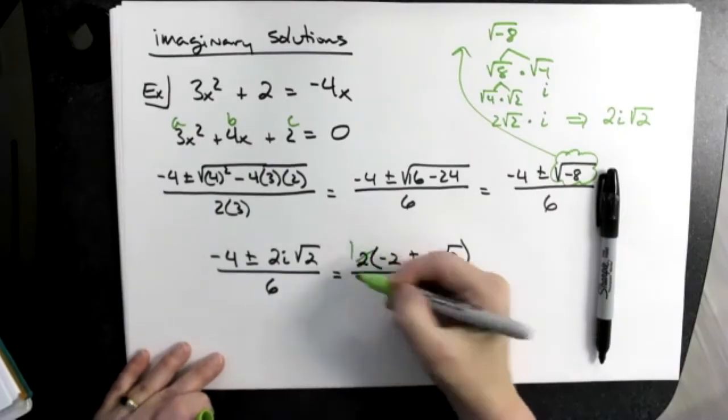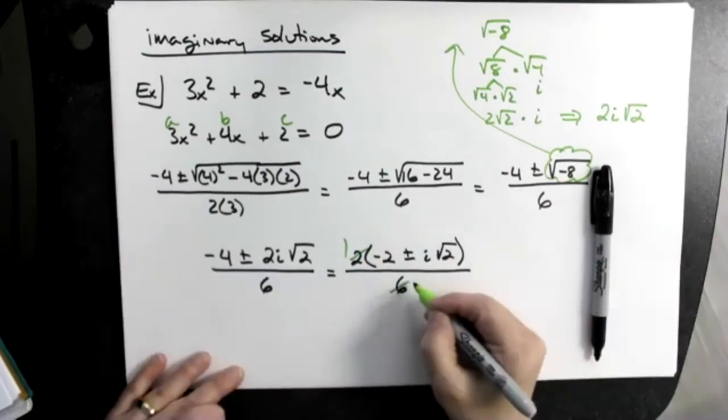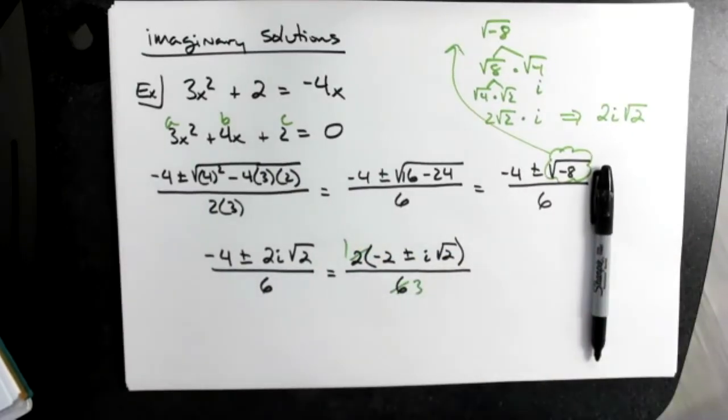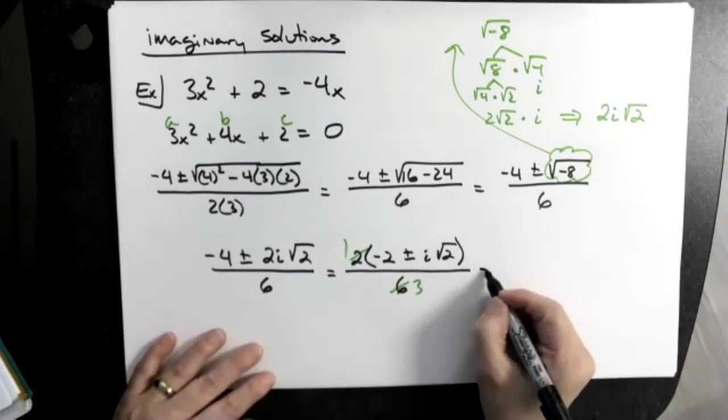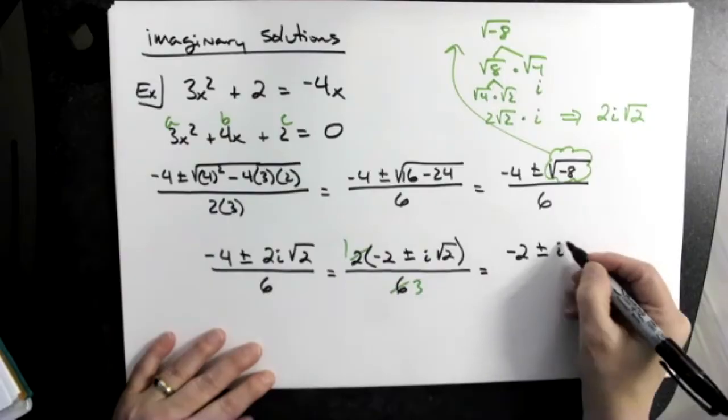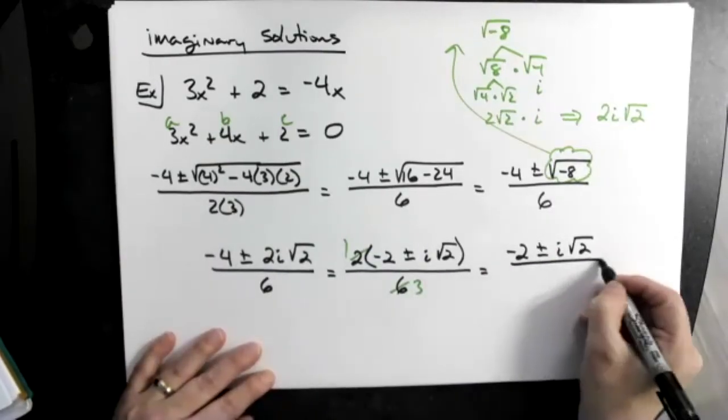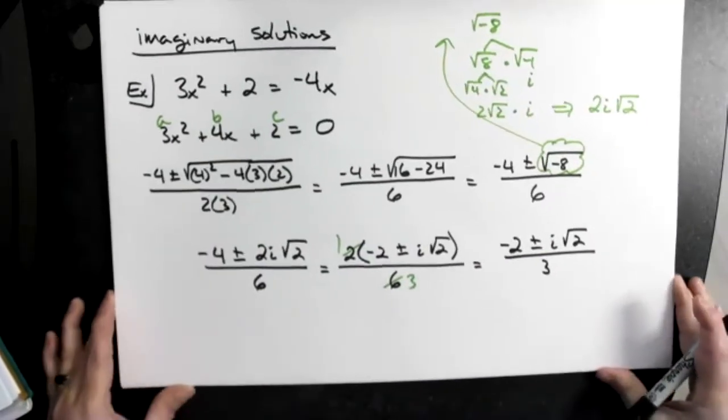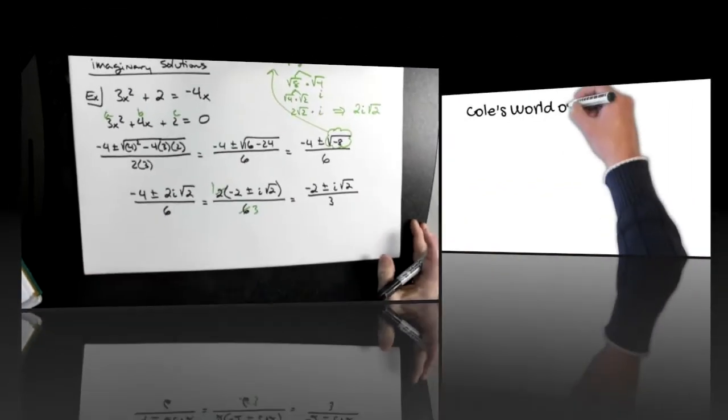So now we're down to negative 2 plus or minus i square root of 2, all over 3.